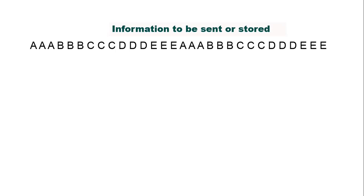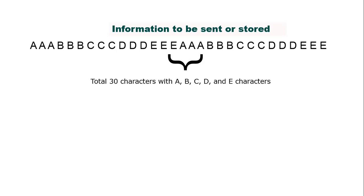Let's dive into the main thing. Suppose we have this information you are watching on the screen — we are trying to send it over a transfer medium or store this message. This message has 30 characters, and it contains five types of characters: A, B, C, D, and E. Each character, when we are trying to send or store it, is assigned 8 bits of data.